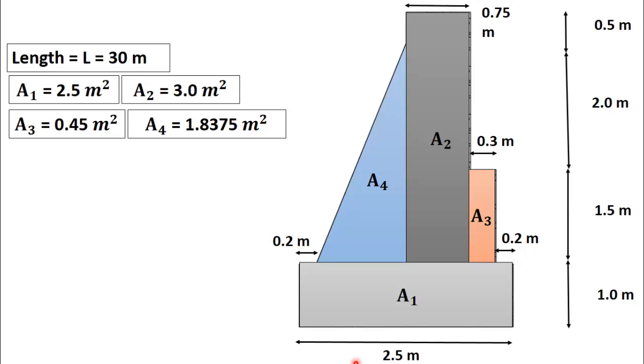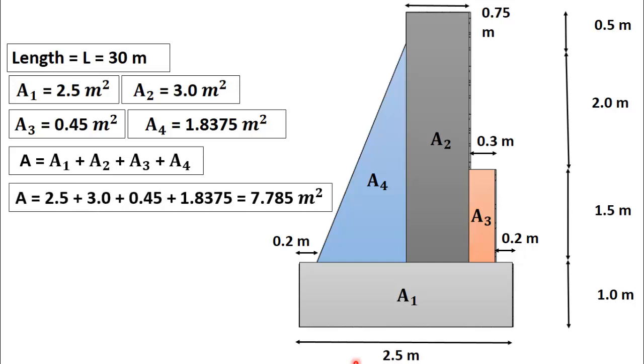Now the total or composite area will equal to A which is equal to A1 plus A2 plus A3 plus A4. Now just put values in this equation we will get the total area is 7.785 square meter.